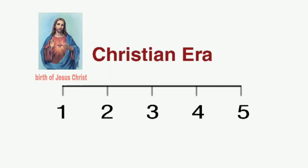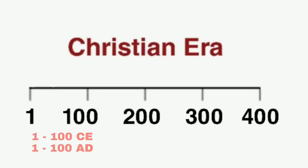The first year of this era is shown with the number 1. The years after that are indicated by the next numbers in serial order — year 1, then year 2, 3, 4, 5 and so on. For example, the first 1200 years is written as 1200 CE (Common Era) or 1200 AD (Anno Domini).